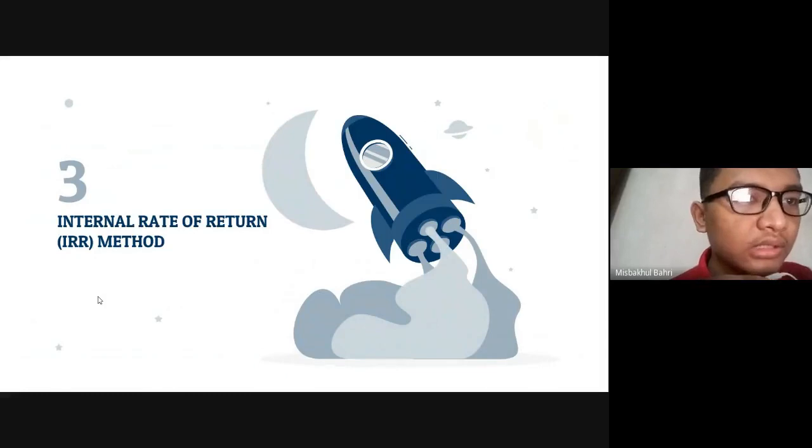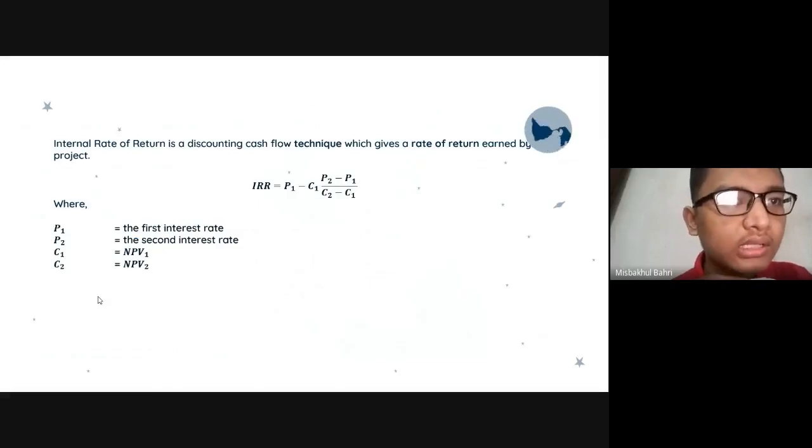For the third method, we use the Internal Rate of Return or IRR method. Internal Rate of Return is a discounting cash flow technique which gives a rate of return earned by a project. The formula: IRR equals P1 minus C1 times P2 minus P1 over C2 minus C1, where P1 is the first interest rate, P2 is the second interest rate, C1 equals NPV1, and C2 equals NPV2.